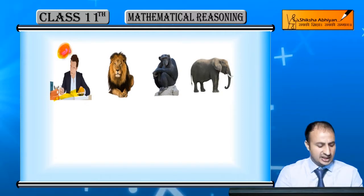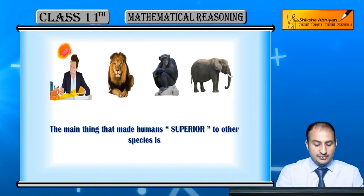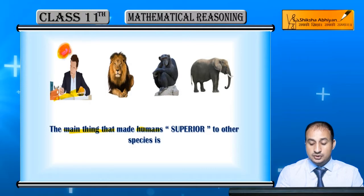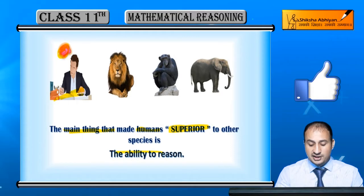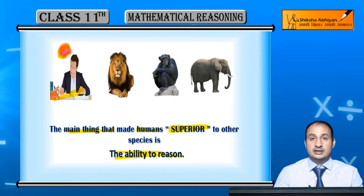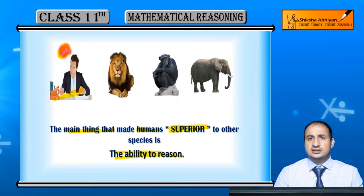Yehi hamari mathematical reasoning mein hum karna hai. So the main thing that made human superior - woh kya hai, doosri species se jo superior karti hai - woh hai ability to reason. Un ke reason karne ki ability jo un ka mind dekhta hai. To ability to reason ko hi kya karte hain - student ye ability of reason hi superior banati hai us species ko.